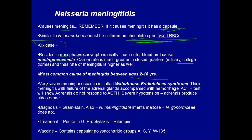Very severe meningitis caused by this organism is called Waterhouse-Friderichsen syndrome. It is caused by Neisseria meningitidis and represents very severe meningococcemia — meningitis with the bacteria in the blood. It includes failure of the adrenal glands accompanied with hemorrhage. You can test for this with an ACTH test: ACTH is supposed to stimulate the adrenals to release aldosterone, and when the adrenals do not respond to ACTH, they are in failure, which is associated with Waterhouse-Friderichsen syndrome.